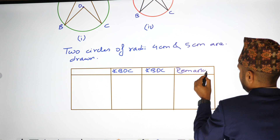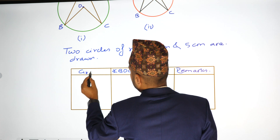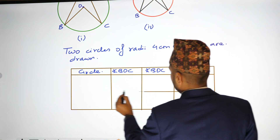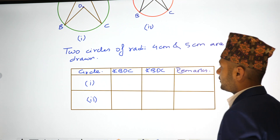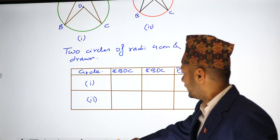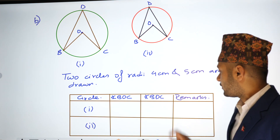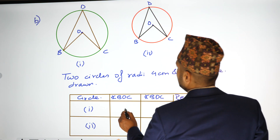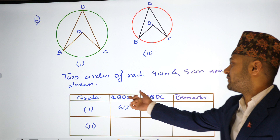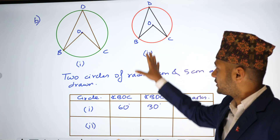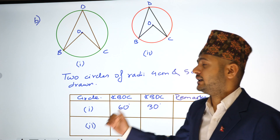For circle 1 and circle 2, we use a protractor to measure angle BOC and angle BDC. The result is that BOC is 60 degrees and BDC is 30 degrees. This example confirms the experimental verification numerically.